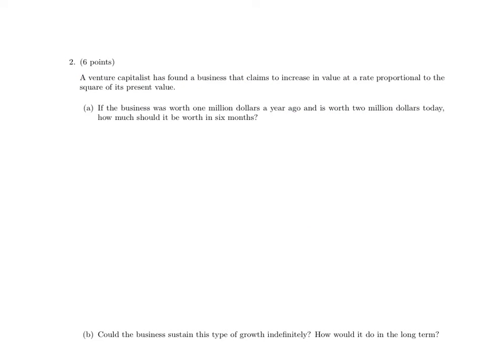We begin with a financial modeling problem. A venture capitalist has found a business that claims to increase in value at a rate proportional to the square of its present value. If the business was worth $1 million a year ago and is worth $2 million today, how much should it be worth in six months? The phrase to zoom in on is 'at a rate proportional to the square of its present value.'